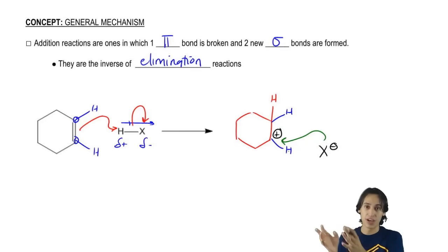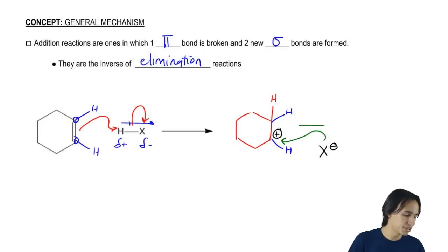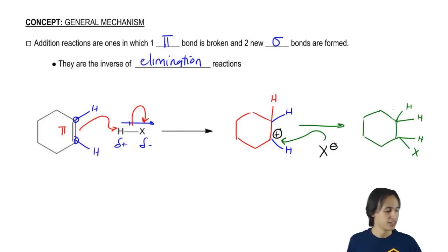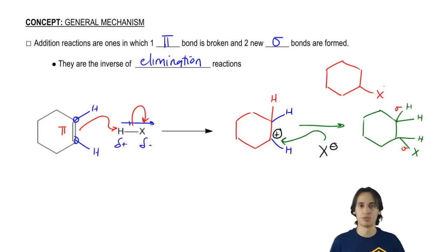The mechanism is final drawn the way it is here. So what that means is that I'm going to get a product and that product is going to be my addition product. What it's going to look like is that now I'm going to have let's just say two H's here and then I'm going to have an X here. Does that make sense so far? Cool. The reason we called this addition is because check it out, I started off with one pi and at the end I got two new sigmas out of it. Now by the way, I drew all those H's just to be thorough, but you wouldn't need to draw all of them. In fact, you could just draw the product like this, a cyclohexane with an X because I know that the X is going to attach to one side or the other.